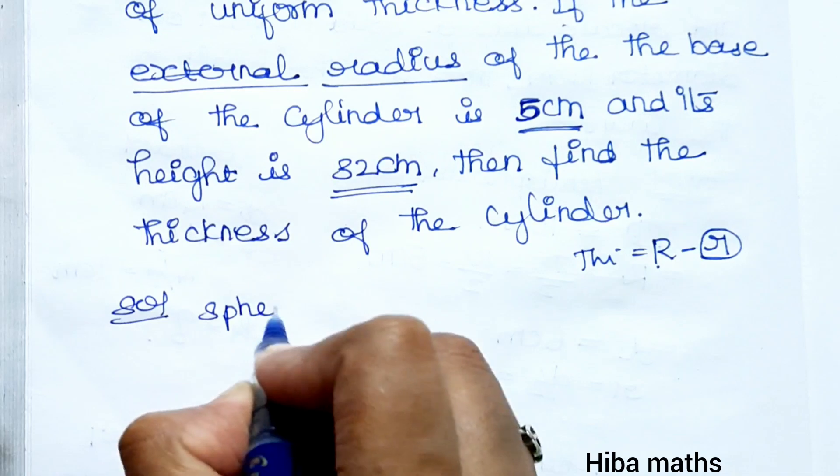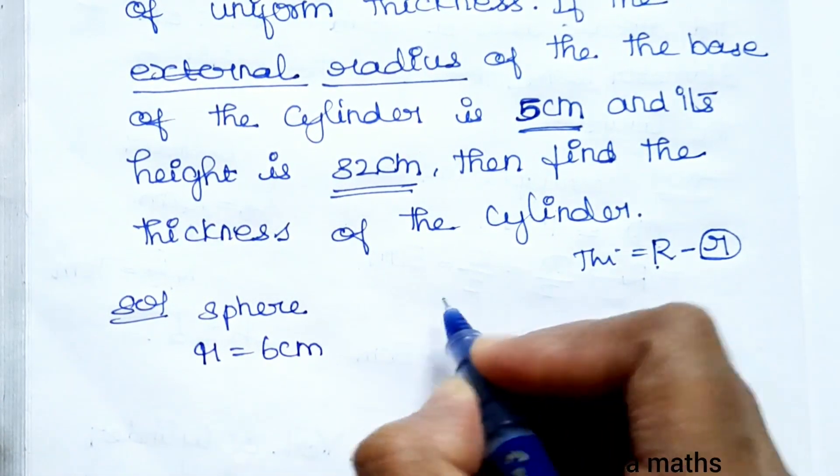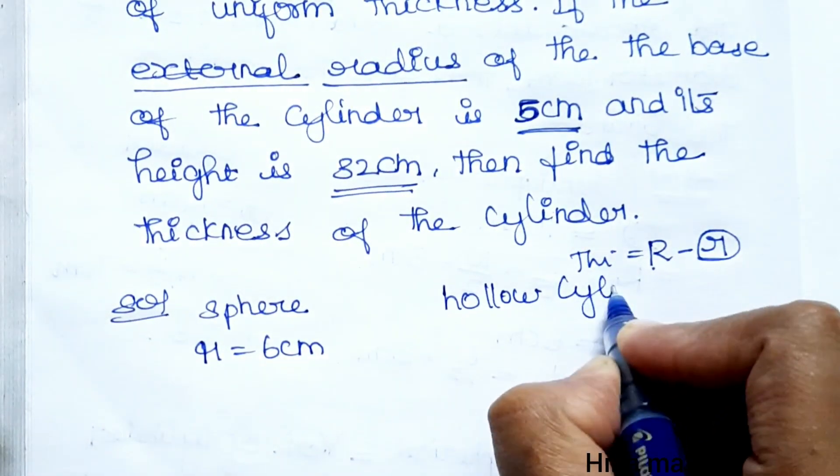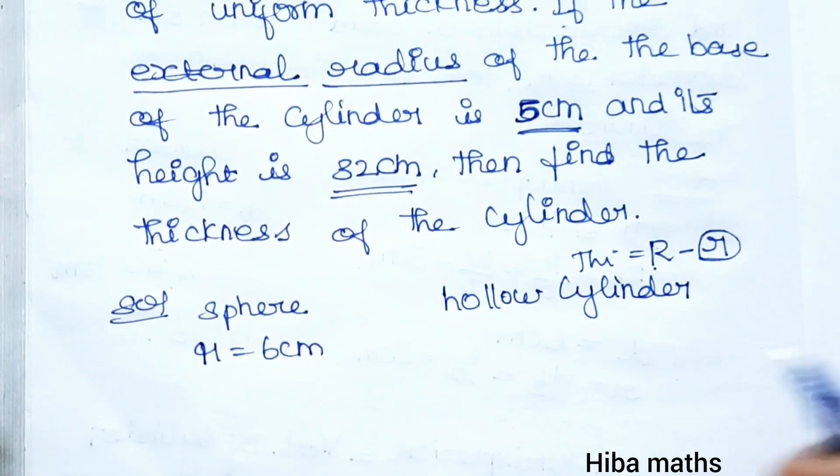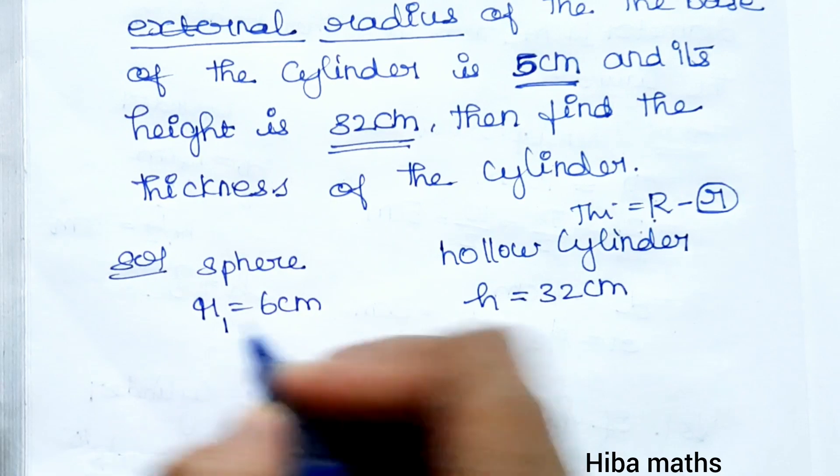For the sphere, the radius r is equal to 6 centimeters. This is a hollow cylinder.